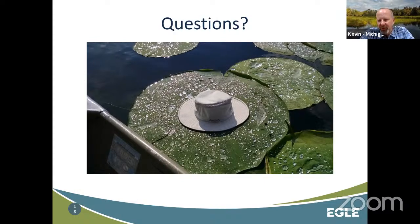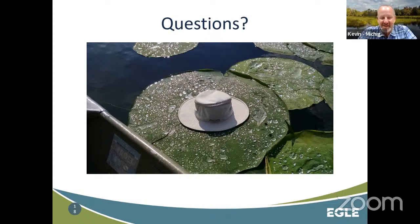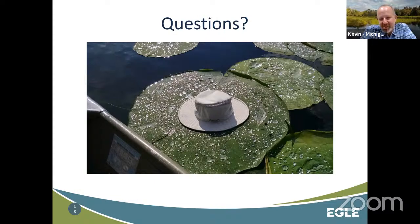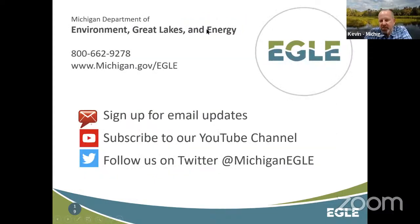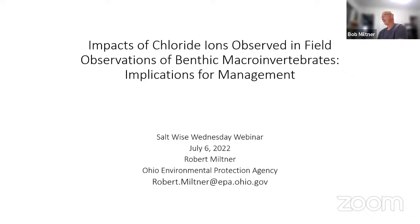I can't help but throw this picture in — this is American Lotus. If you've never seen it, we have some in Southeast Michigan. When you're up close to these aquatic plants, they're amazing — like freshwater lilies with little pads that grow. And with that, I'll kick this over to Bob. Thank you, Kevin. You did a marvelous job of teeing up what I'm going to say. It's good that people have that administrative framework ringing in their ears as I go through my slides.